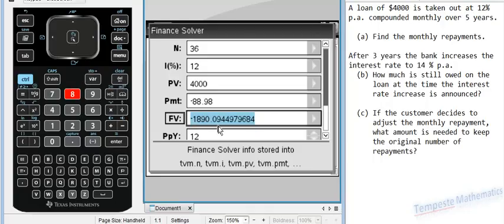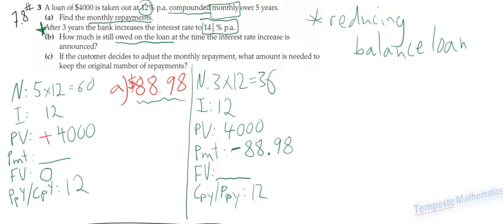So, $1,890.09. Answer. And again, rounding to the nearest decimal place. That's $1,890.09.